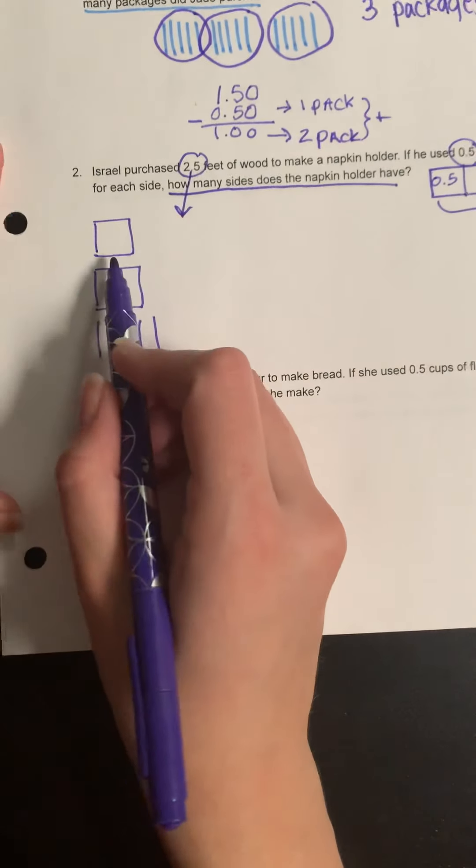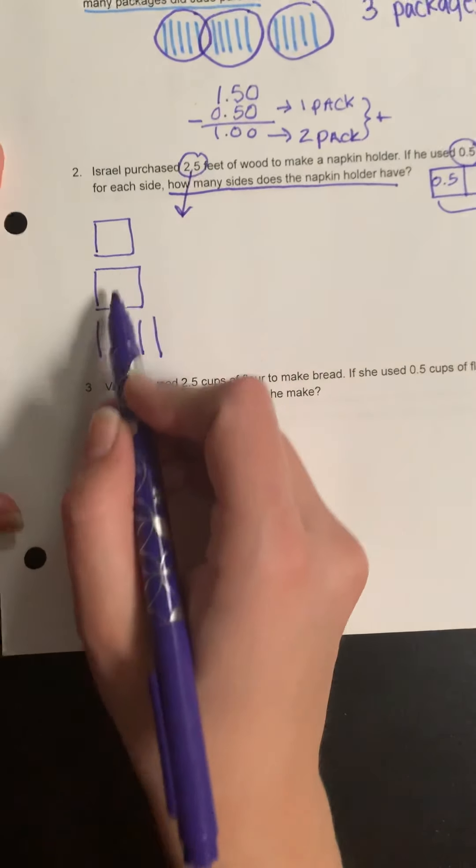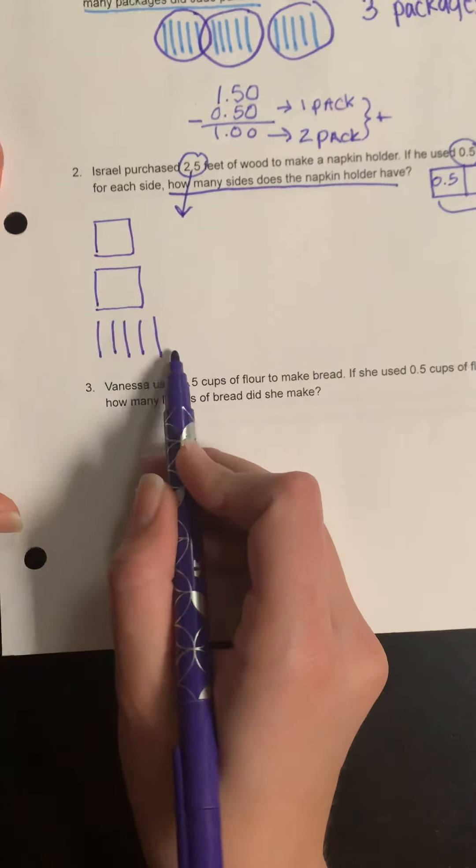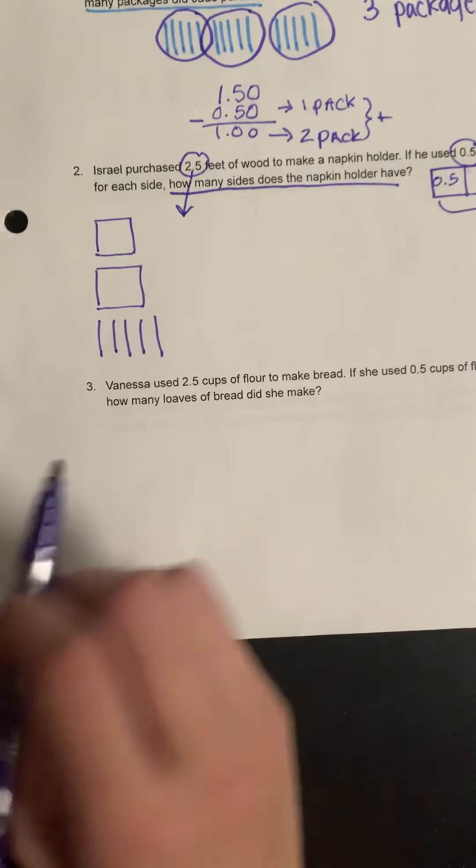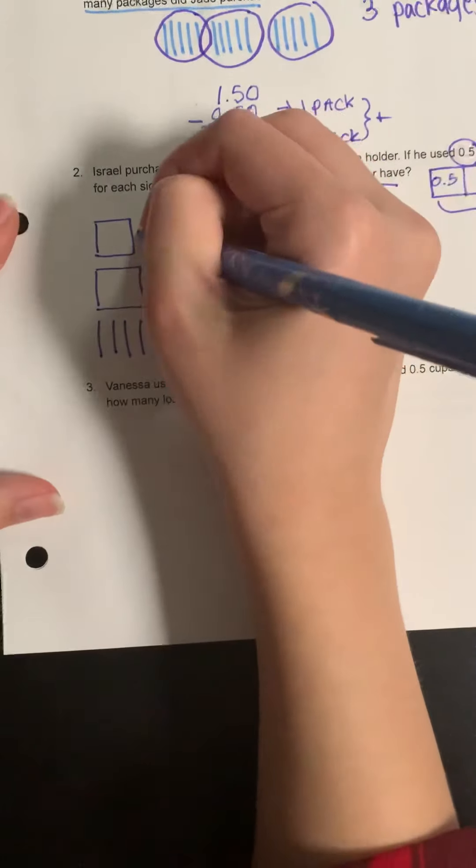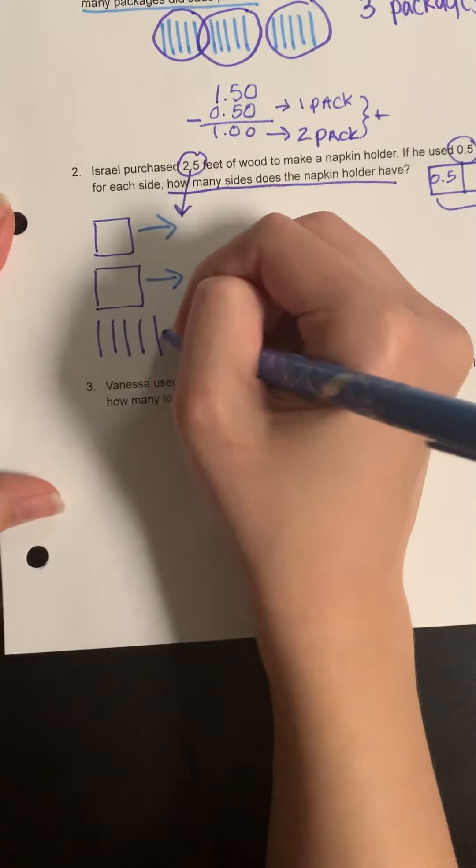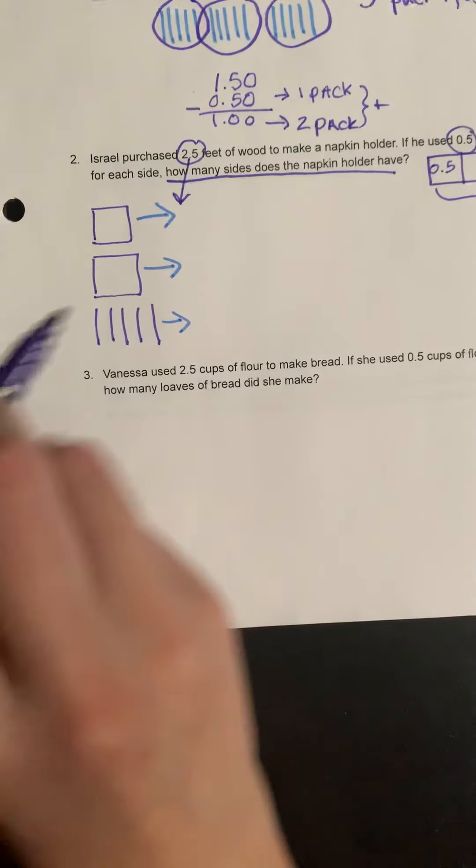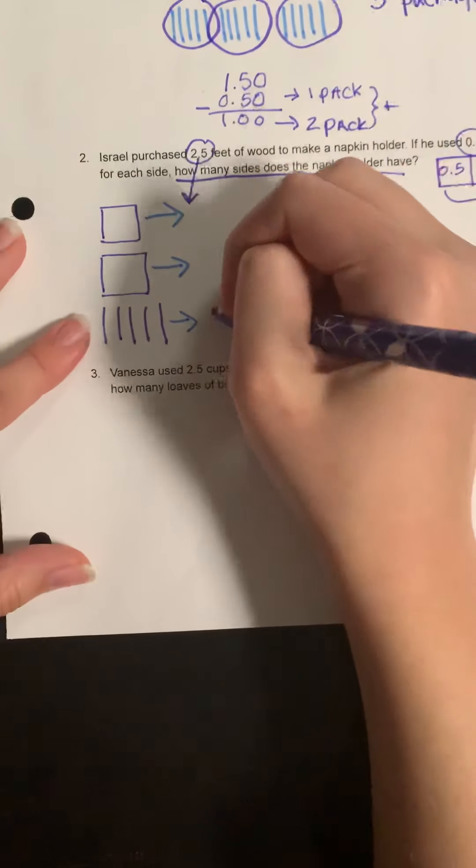So here's my 2 whole numbers and then my 5 tenths. I'm going to turn my whole numbers now into tenths also, and I'm going to keep these 5 tenths at the bottom. 1, 2, 3, 4, 5 - the same, so that I have a big group of tenths to work with.